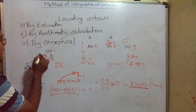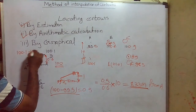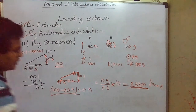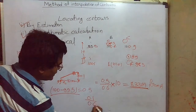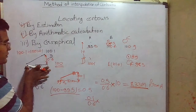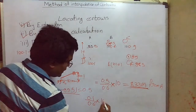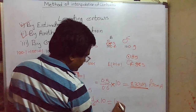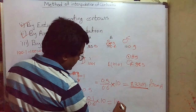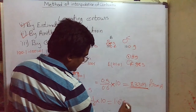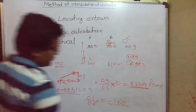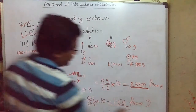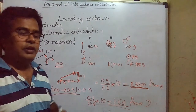For a point near the D side, for example locating RL 100.1 side: 100.1 minus 100 equals 0.1. So 0.1 divided by 0.6 multiplied by 10 gives 10/6, which equals 1.67 meters from point D. So we can easily interpolate the distance using arithmetic calculation.